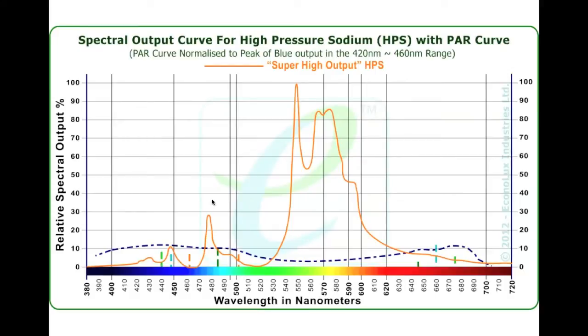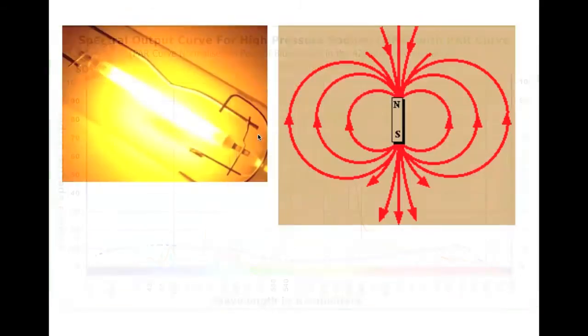Here's an example, this is a high pressure sodium in a spectral curve, and you can see all of its light is in this green and yellow area. It's got a little bit of red, a little bit of blue. High pressure sodium and metal halide, really designed for people, not plants.